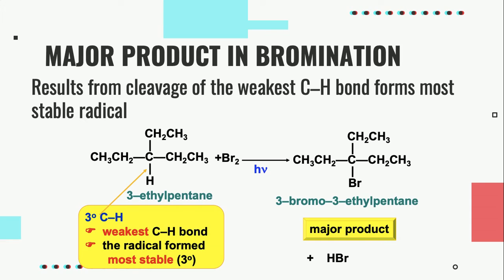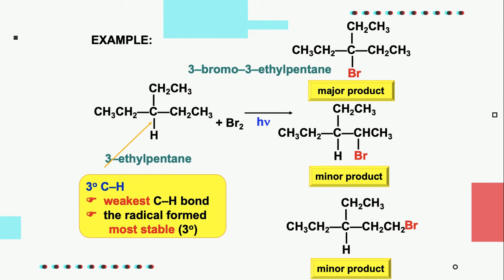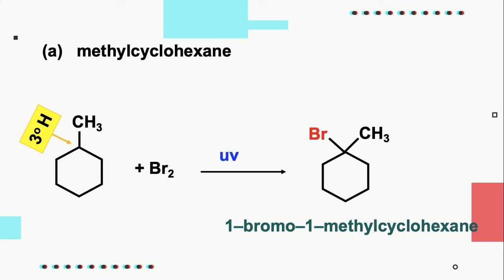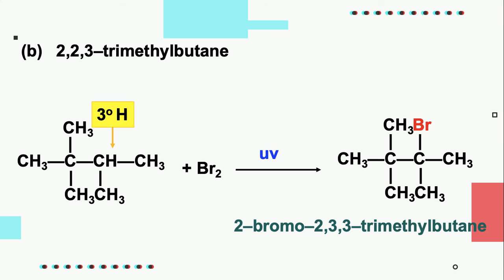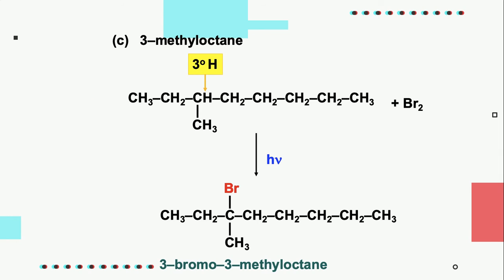The major product in bromination results from cleavage of the weaker C-H bond, which eventually forms the most stable radical. The replacement of H attached to primary and secondary carbon by bromine forms minor products. The replacement of H of the weakest C-H bond, forming the most stable radical, can be seen in methylcyclohexane, 2,2,3-trimethylbutane, and 3-methyloctane.